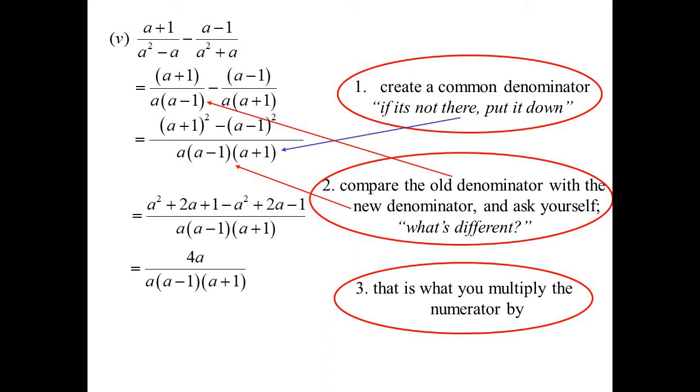That's one way you could have done it. Another way you could have done it, you said, hang on, this is the difference of two squares. So I know it'll be a plus 1 minus a minus 1. I think that's 2. And then in the other one, it'll be a plus 1 plus a minus 1, which is 2a. Two times 2a, 4a. Could have done it that way.